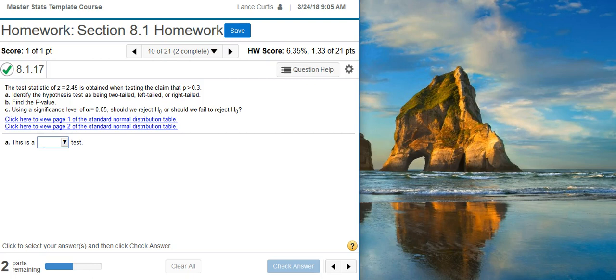Here's our problem statement. The test statistic of z equals 2.45 is obtained when testing the claim that the population proportion is greater than 30%. Part A: Identify the hypothesis test as being two-tailed, left-tailed, or right-tailed. Part B: Find the p-value. Part C: Using a significance level of alpha equals 5%, should we reject H-naught or should we fail to reject H-naught?